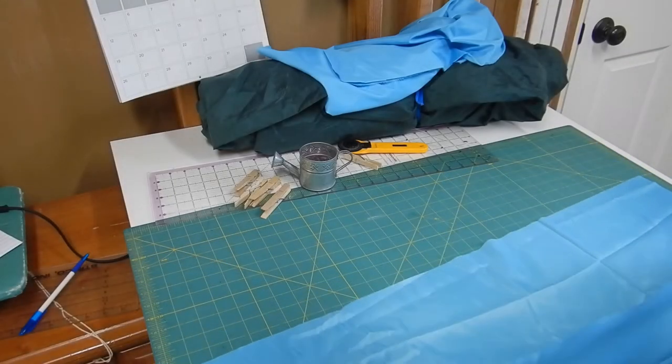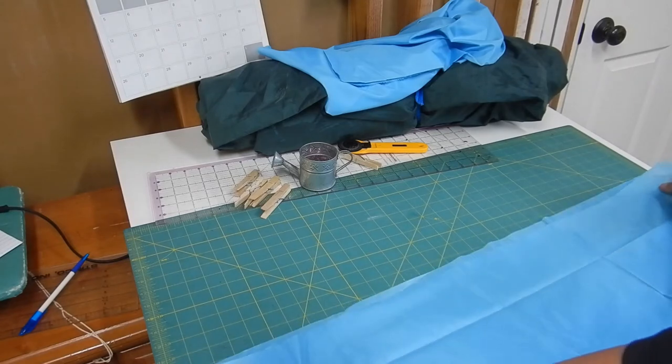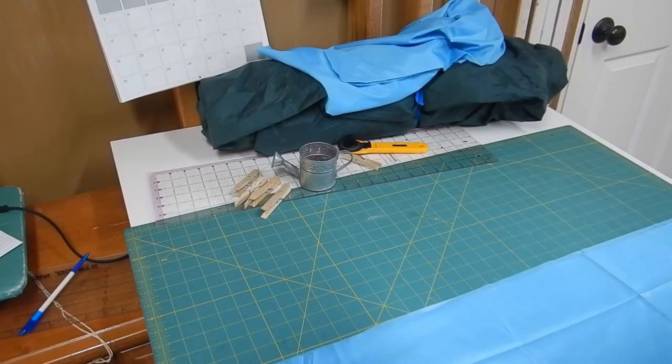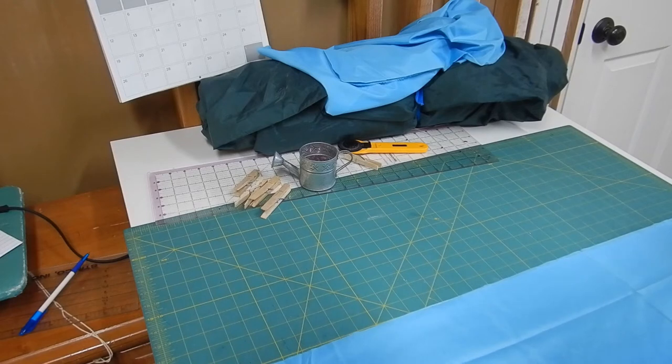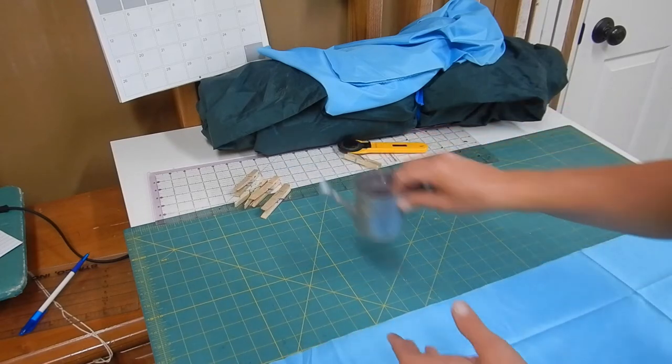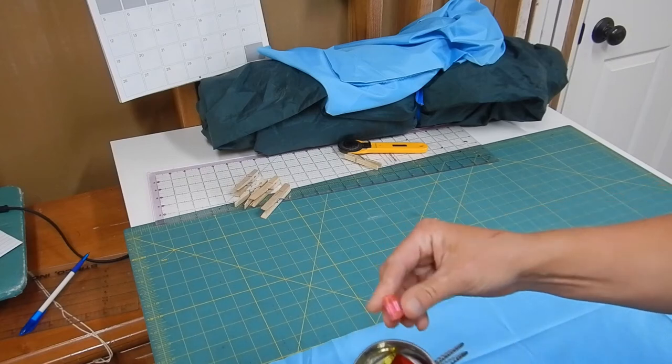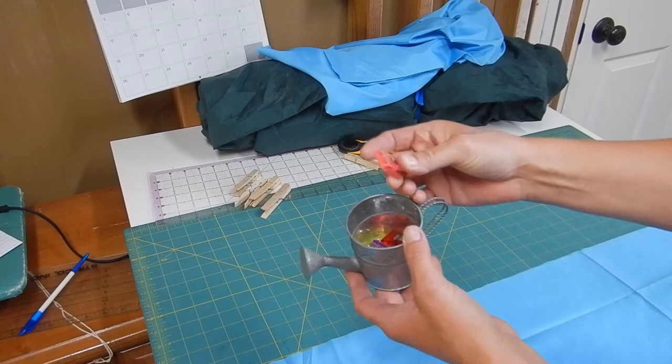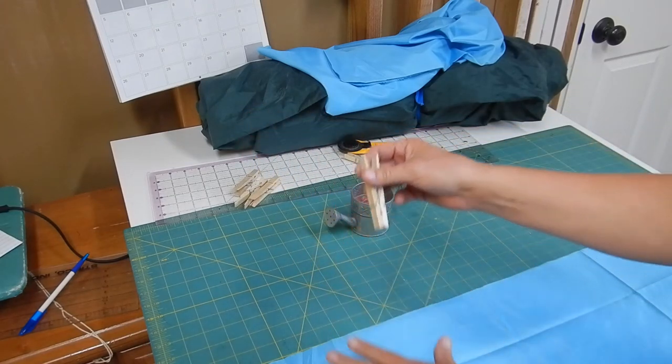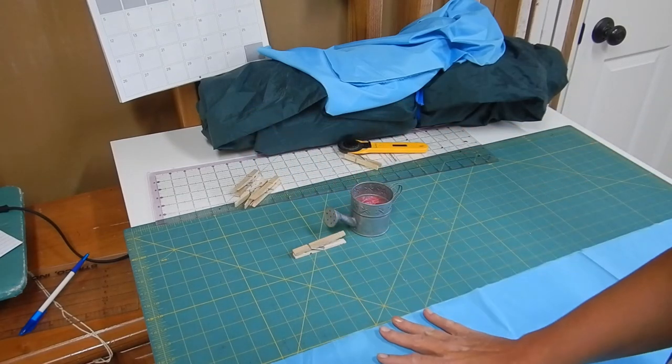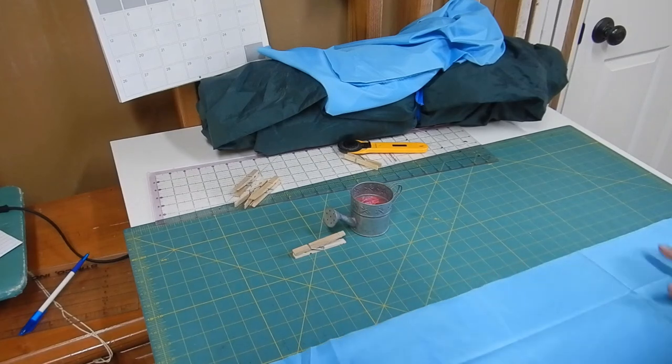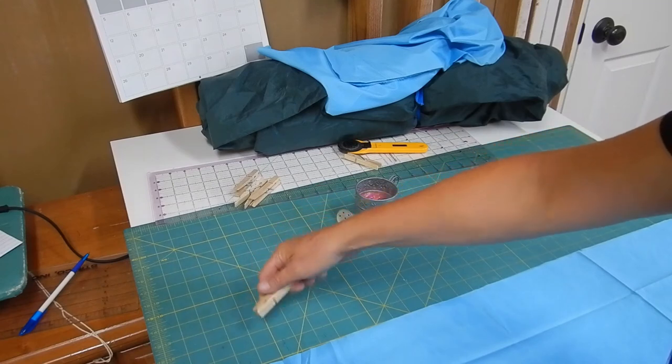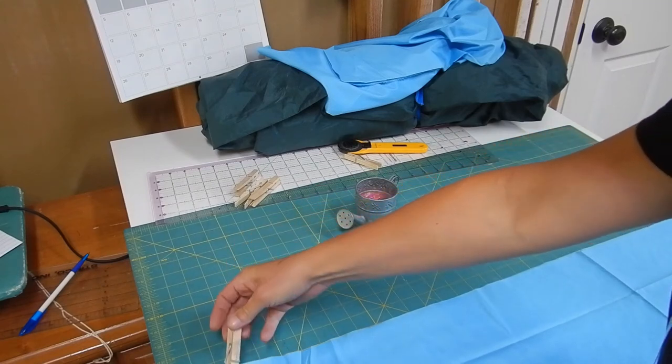Put the fabric wrong sides together because we're doing a French seam, which means we're going to enclose it. And what I use is you can use these wonder clips. These are really cool and you can get them at the fabric store, or you can use clothes pins because I don't want to make holes in this fabric. So all I'm going to do is just clip it together so that I can take it to the sewing machine and sew it.